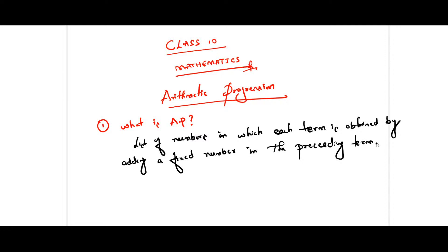For example, 2, 4 — 4 minus 2 is 2. You add 2 to 4, you get the next number. Again plus 2, you get the next number. I think these are the basics — I hope you all know about this. So this is nothing but AP. I am not going to concentrate more on the definitions part because we have to solve the numericals on this chapter.